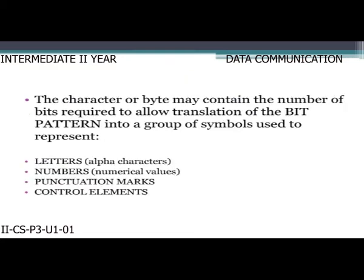In isochronous transmission, the characters or bytes may contain the number of bits required to allow translation of the bit pattern into a group of symbols representing alpha characters, numerical values, punctuation marks, and control elements.